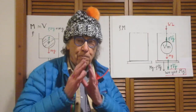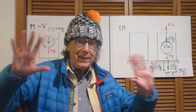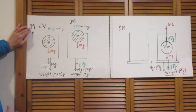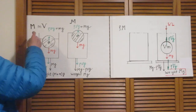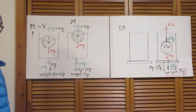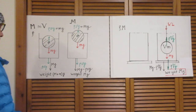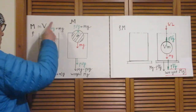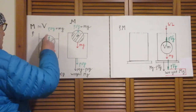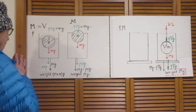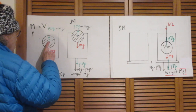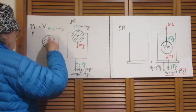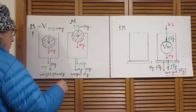That is totally trivial. Forget Archimedes — we first have an object with mass capital M, we add to that another object with mass little m, so obviously the scale will indicate the sum of the weights of those two: capital M plus little m times g. Even though it may be the first time you realize that if the liquid exerts a buoyant force upward on the object, then the object must exert an equal magnitude force downward on the liquid.